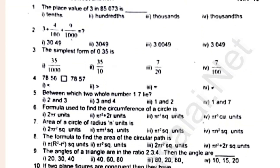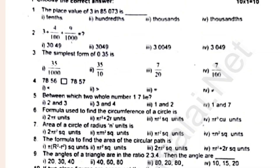Let's get into the video. The place value of 3 is 0. 3 plus 4 divided by 100 plus 9 divided by 1000 is equal to 0. The simplest form of 0.35 is 0.